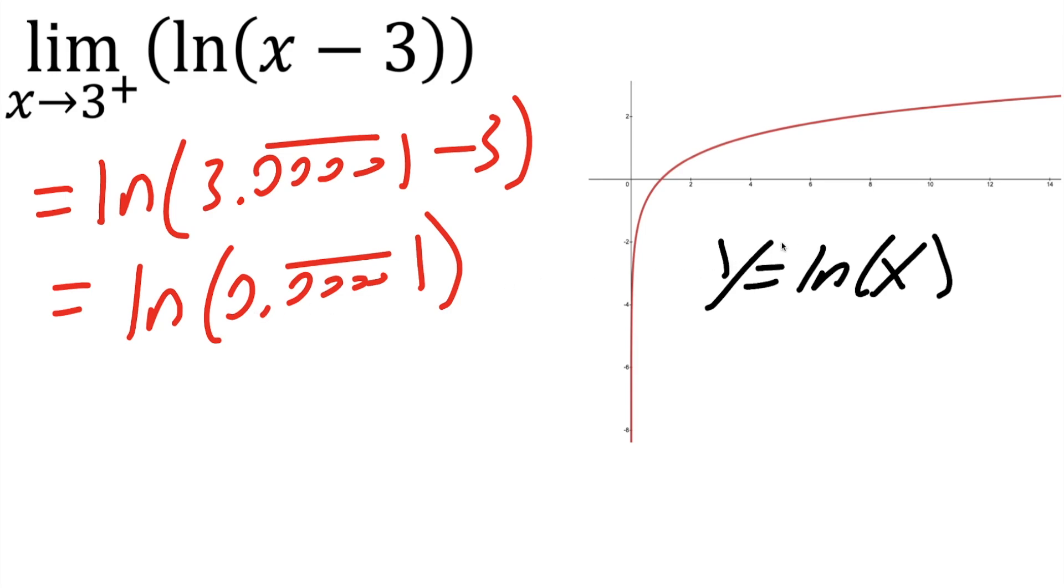Now to the right, I have a quick sketch of the graph y is equal to ln x. And you notice when the value of x is almost zero, but not touching zero, but almost zero, it goes straight down to negative infinity.